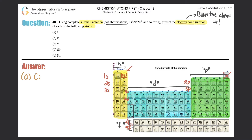Now let's start — we'll go a little slow for carbon so you can pick it up, then do b through e faster. Start at hydrogen: that's the 1s category, so write 1s. Since you pass both 1 and 2 (helium is atomic number 2), you put a 2 superscript: 1s2. Drop down to 3 — that's 2s — and you still want to reach 6, so you pass both 3 and 4: 2s2.